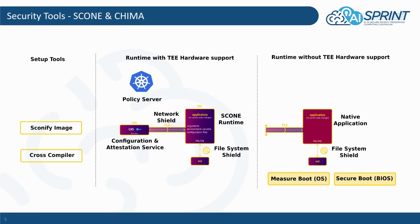For the runtime support for an application, we have the following components. We have the SCONE runtime, which was previously compiled in using our SCONEify image tool or the cross compiler, which actually provides the possibilities to run these applications in so-called enclaves. In addition to that, we have the file shield system support such that file access will be protected — so if files are being generated or read, these can be encrypted transparently when the application is running in the enclave. We also have the network shield, which provides shielding for network traffic such that no one can look into the data that is exchanged between the several services that AI Sprint supports.